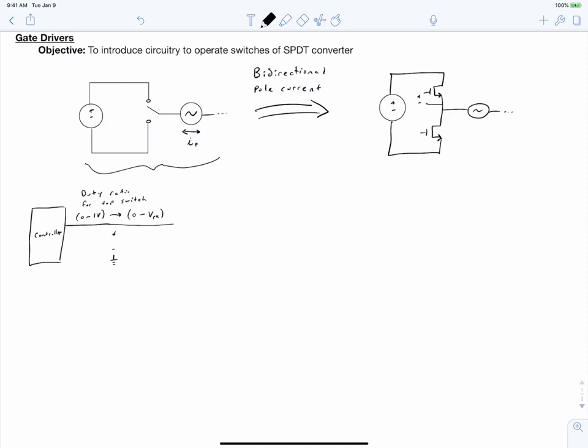The first step is to compare our duty ratio signal against a carrier waveform. If this is an analog circuit, we would make use of a comparator integrated circuit. If this is a digital circuit, in a microcontroller or FPGA, we can do the same thing using firmware.